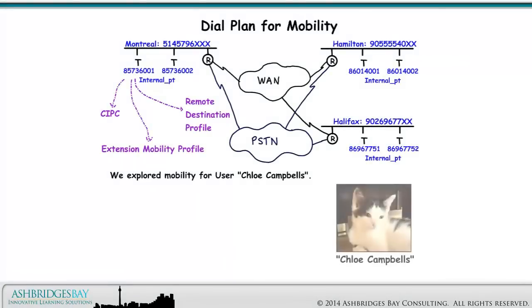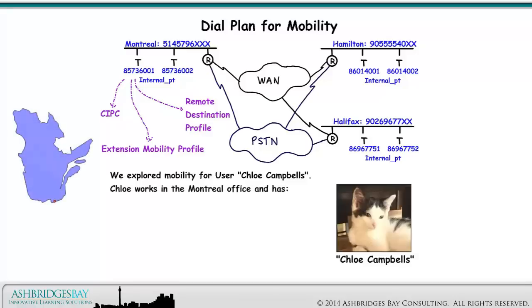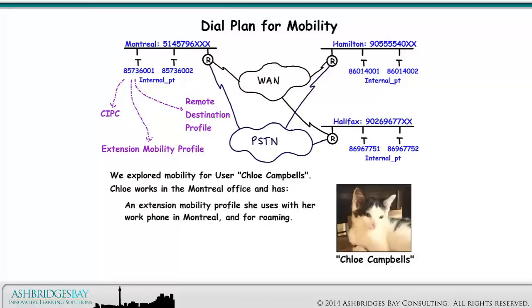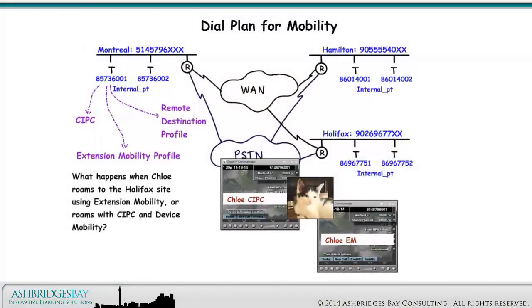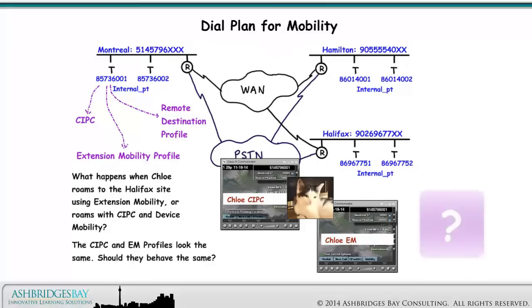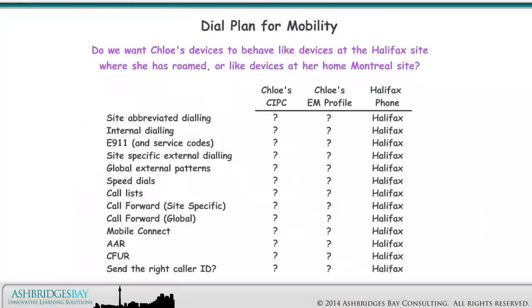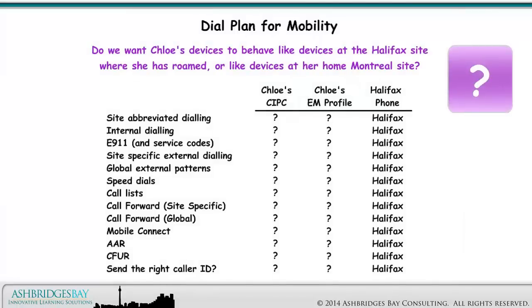We explored mobility for user Chloe Campbell. Chloe works in the Montreal office and has an extension mobility profile she uses with her work phone in Montreal and for roaming, CIPC for roaming, and a remote destination profile for single number reach or mobile connect. What happens when Chloe roams to the Halifax site using extension mobility, or roams with CIPC and device mobility? The CIPC and EM profiles look the same — should they behave the same? Do we want Chloe's devices to behave like devices at the Halifax site where she has roamed, or like devices at her home Montreal site?